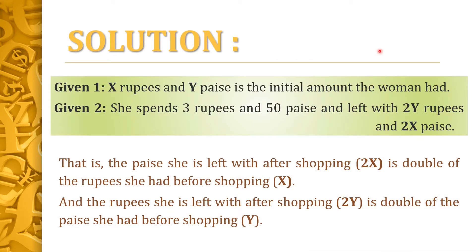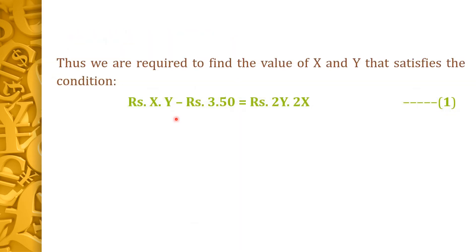Solution: It is given that the woman had an initial amount of x rupees and y paisae. She spends 3 rupees and 50 paisae and is left with 2y rupees and 2x paisae. The paisae she is left with after shopping is double the rupees she had before shopping, and the rupees she is left with is double the paisae she had before shopping. Thus, we need to find values of x and y satisfying: x rupees and y paisae minus 3 rupees and 50 paisae equals 2y rupees and 2x paisae. Let this be equation 1.